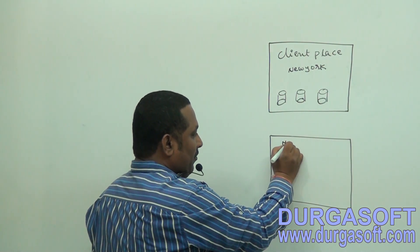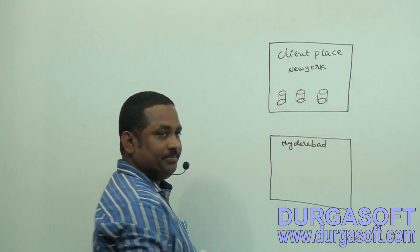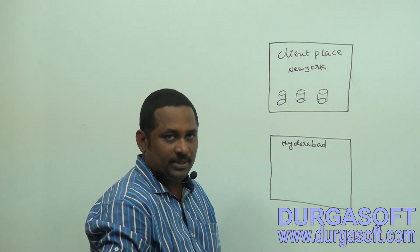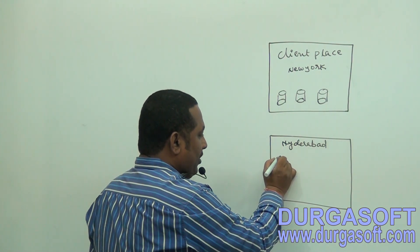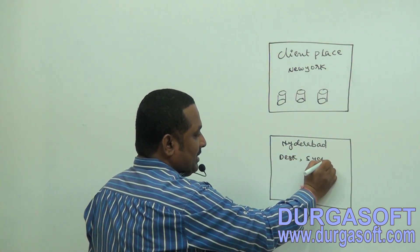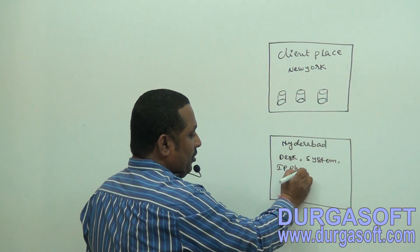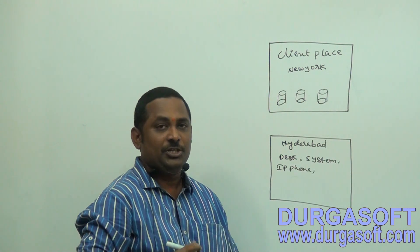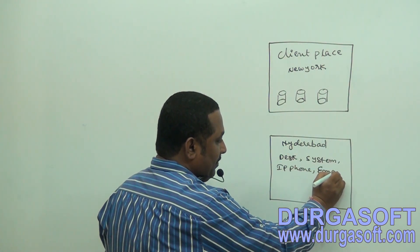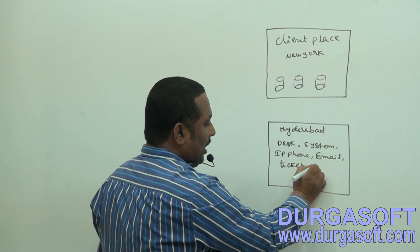You are going to sit in your office. Just assume you are working for a company located in Hyderabad. In this office, the company will provide you a desk, a system, an IP phone — meaning an internet phone with international dialing facility — an official company email ID, and a ticket tool.